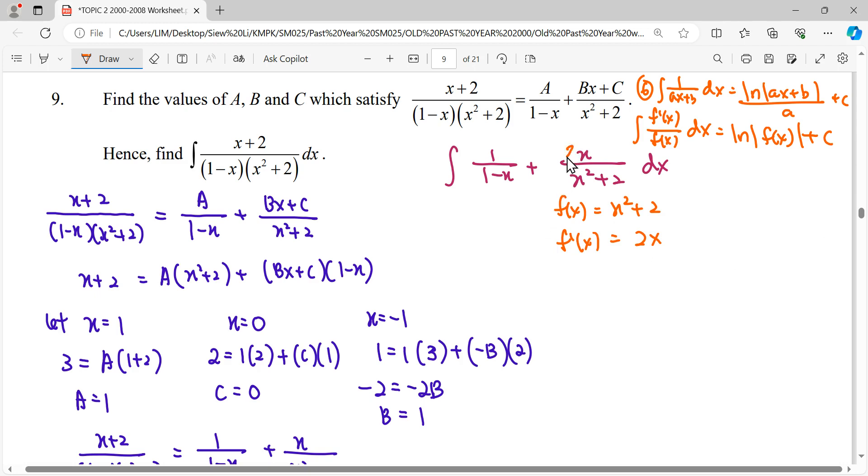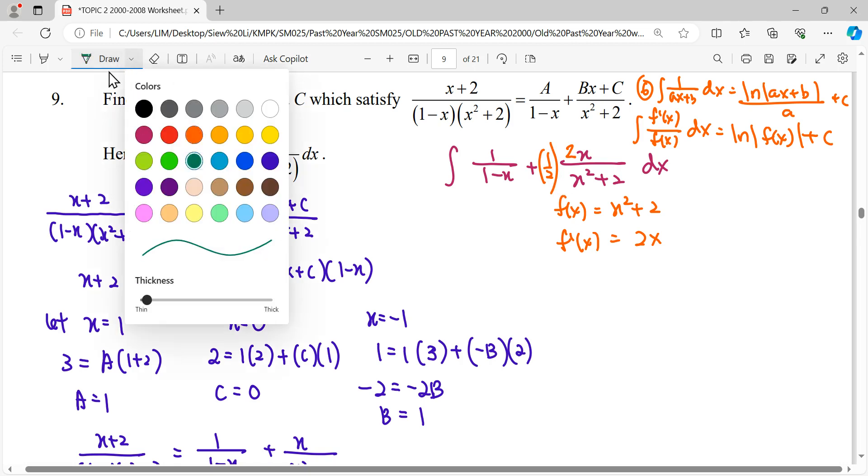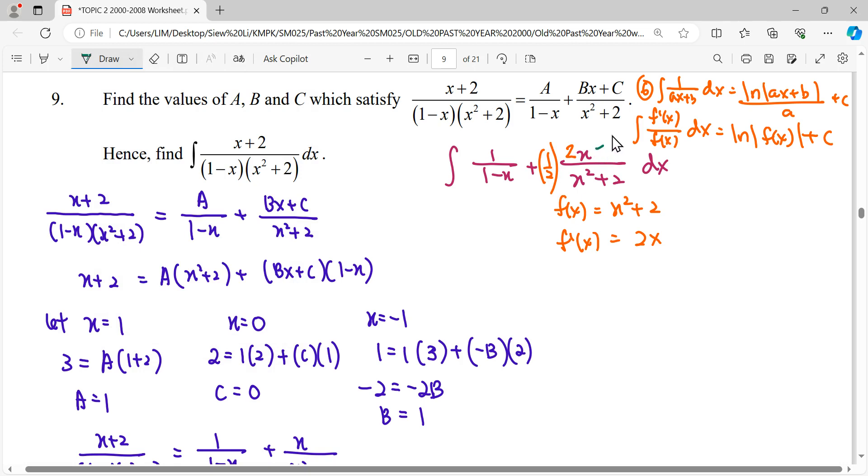So our f(x) denominator is a quadratic. When we differentiate it we get 2x. So we can modify our fraction here. We multiply by 2 and divide by 2, so it becomes 1 over 2 coefficient out there. So in this case we can get this is a pattern of f prime x.